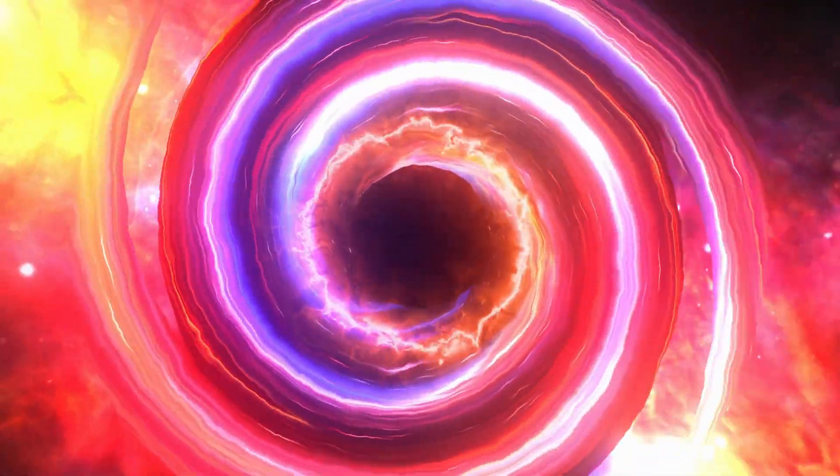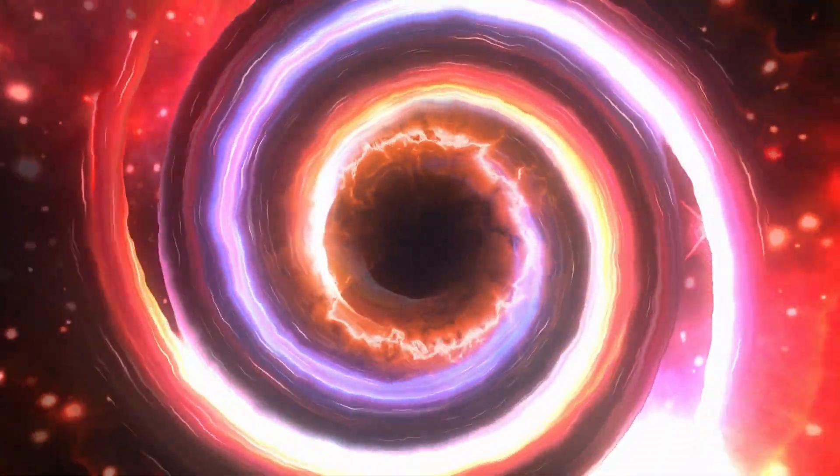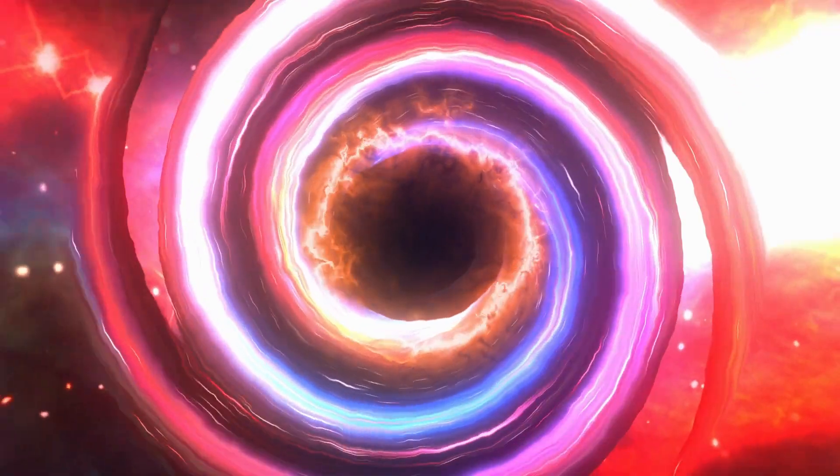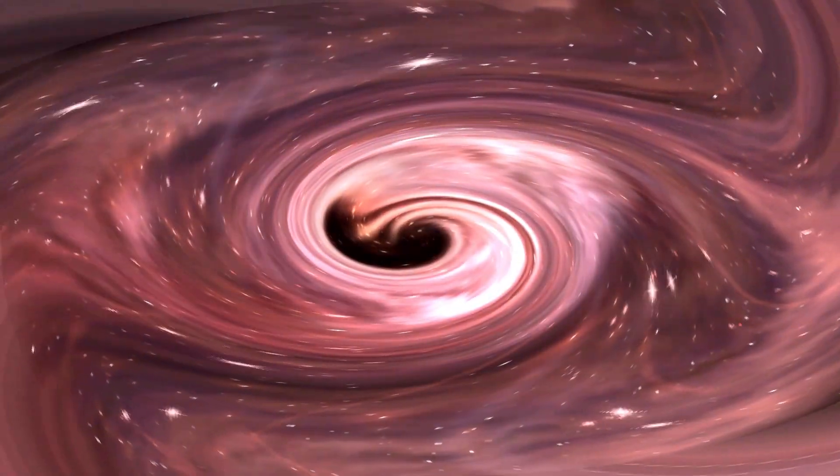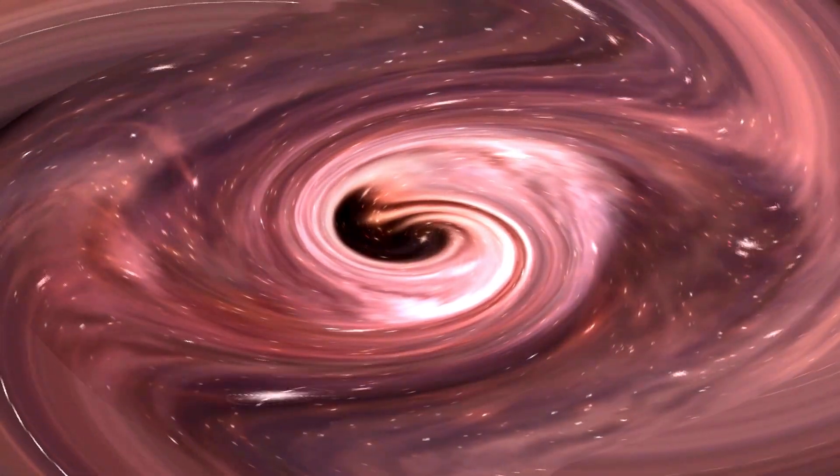The surface gravity on a neutron star is so intense that a teaspoon of its material would weigh about as much as a mountain. The surface of Venus is extremely inhospitable, with temperatures hot enough to melt lead and an atmosphere composed mainly of carbon dioxide.